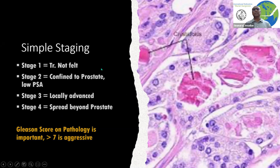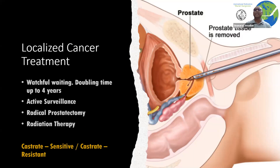Stage 1 tumors are not felt clinically and are diagnosed by screening methods. Stage 2 is confined to the prostate with a low PSA. Stage 3 is locally advanced disease and stage 4 has spread. This is one of the malignancies where, because it is a slow-growing tumor with a doubling time ranging from 1.5 months to almost 4 years, low-grade malignancy incidentally diagnosed can be actively watched. Most of these malignancies are sensitive to castration or androgen deprivation, and if they are resistant to it, the prognosis is bad.